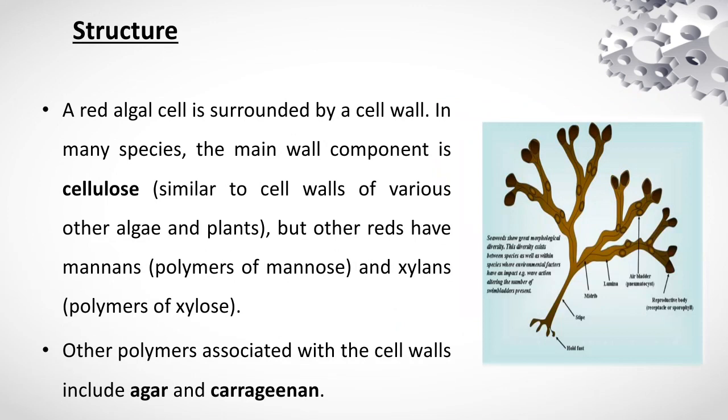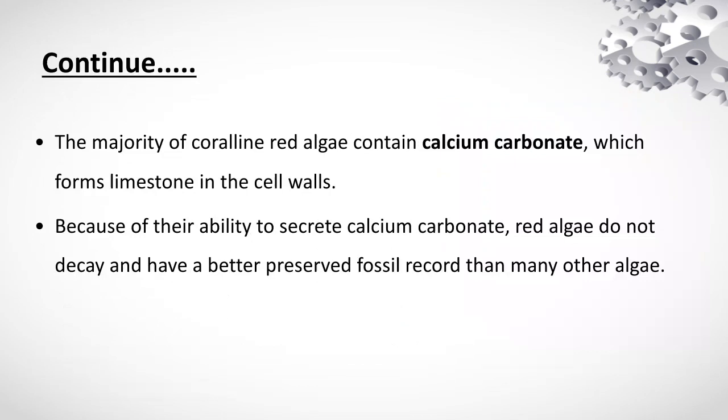Structure: a red algal cell is surrounded by a cell wall. In many species the main wall component is cellulose, but others have mannans and xylans and other polymers. Associated with the cell wall is agar. The majority of coralline red algae contain calcium carbonate, which forms limestone in the cell wall. Because of their ability to secrete calcium carbonate, red algae do not decay and have a better-preserved fossil record than many other algae.